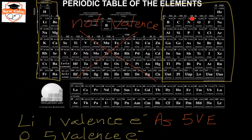Since all atoms in the same group have the same number of valence electrons, their reactivity is similar. So if you're asked what elements you would predict to have a similar reactivity to phosphorus, the answer would be either nitrogen or arsenic, because they are the two closest elements to phosphorus in the same group on the periodic table.